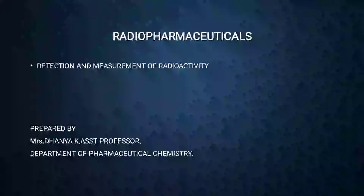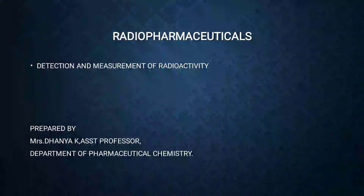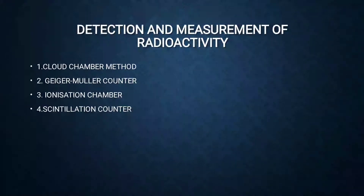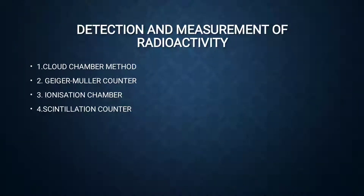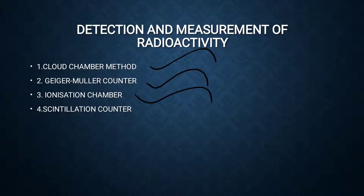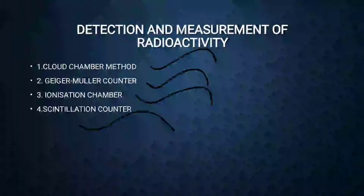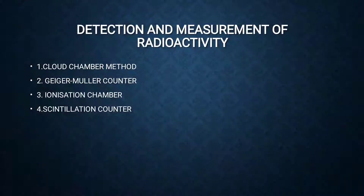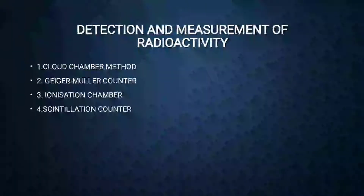Today we are going to discuss the detection and measurement of radioactivity. Radioactivity can be measured by four methods: the cloud chamber method, the Geiger-Müller method, the ionization chamber method, and the scintillation counter method. These are the four methods available for the detection of radioactivity.